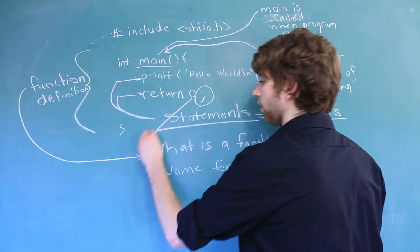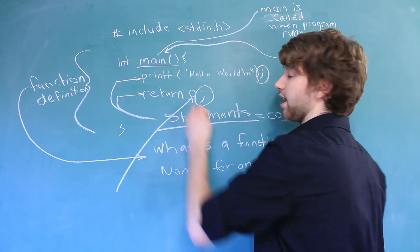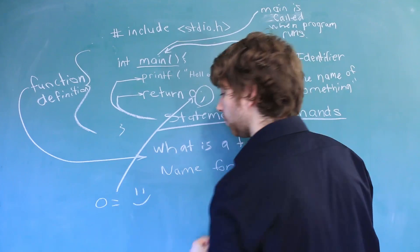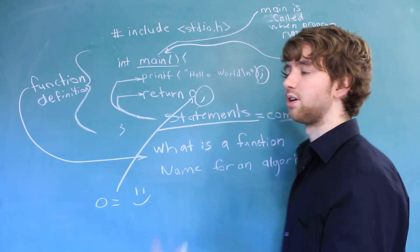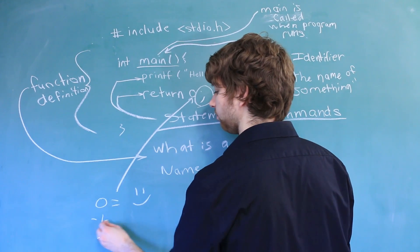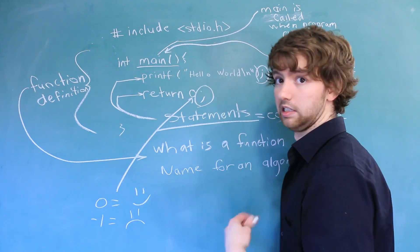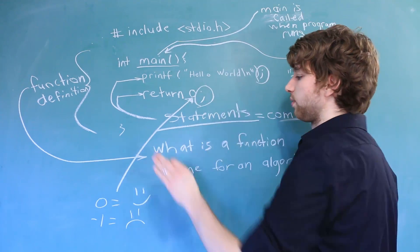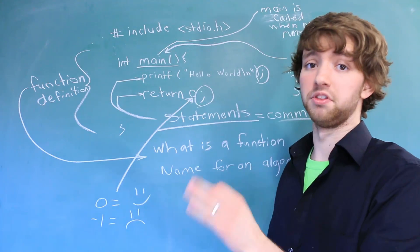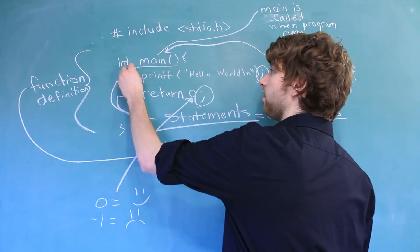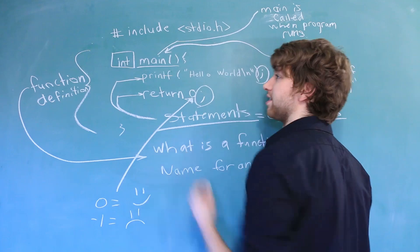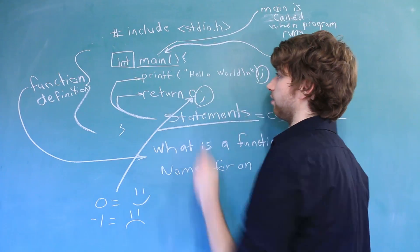The zero here says that the program worked as expected. We could, if we wanted, return some other value. For example, we could return a negative one. We could make that mean things didn't go so good. But in this situation, there's no reason why we should return anything other than a zero.